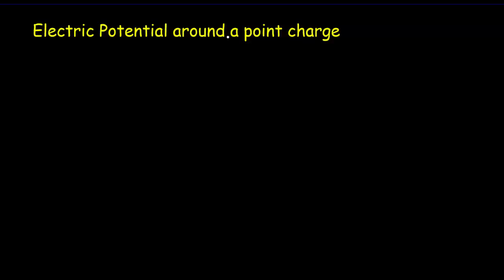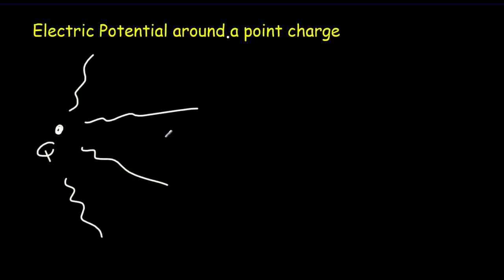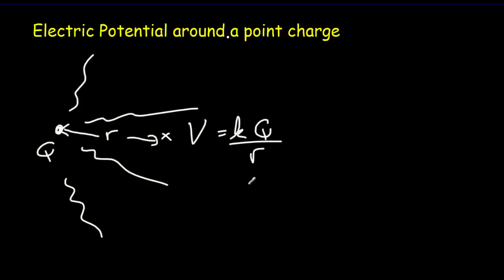So you've seen what you can do with an electric potential — but how do you get it in the first place? We're only going to be able to do it for the simplest cases. The simplest case is a point charge. Imagine a point charge capital Q, with an energy field around it. If we pick out some point a distance r away, the electric potential at that point is given by Coulomb's constant times the size of the central charge divided by r. Anywhere along that circle you get a constant potential, which has a special name: it's called an equipotential.